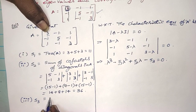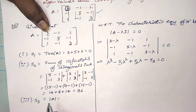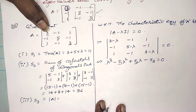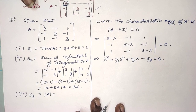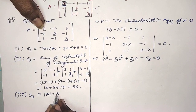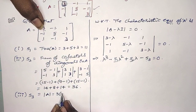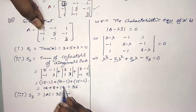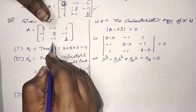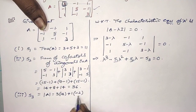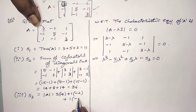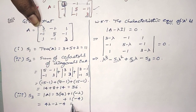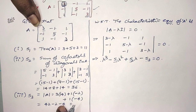What is S3? S3 is the determinant of A. You can find it manually or use a calculator. Here I am finding it manually: 3 times (5 times 3 minus 1) gives 3 times 14 equals 42; minus 1 times (minus 3 plus 1) gives minus 1 times minus 2 equals plus 2, but with the minus sign it's minus 2; plus 1 times (1 minus 5) equals minus 4. So S3 equals 42 minus 2 minus 4 equals 36.